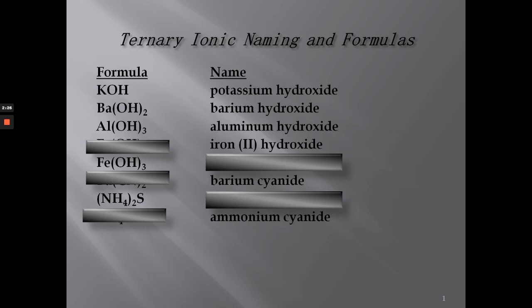Iron(II) hydroxide. For transition metals, like we learned with the stock system naming, the Roman numeral tells us the oxidation on the metal. So this is iron plus two. Remember, the other ion for iron is iron plus three. From the polyatomic ion sheet, hydroxide is OH with a negative one charge. Since this is plus two and hydroxide is minus one, in order for them to cancel, I need parentheses around the hydroxide with a subscript of two.